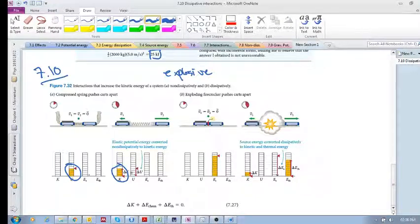So for this one we know delta K plus delta U equals zero. This is a reversible, non-dissipative reversible interaction. Then what about this one? It looks very similar.